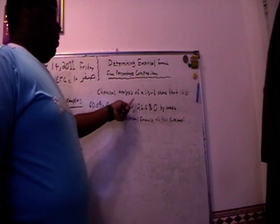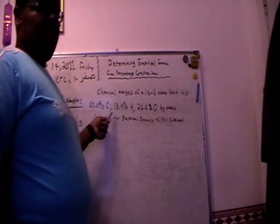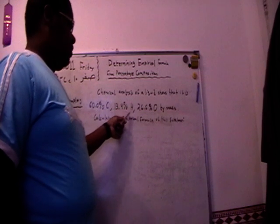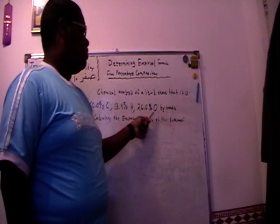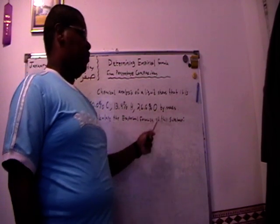Chemical analysis of a liquid shows that it is 60.0% carbon, 13.4% hydrogen, and 26.06% oxygen by mass. Calculate the empirical formula of this substance.